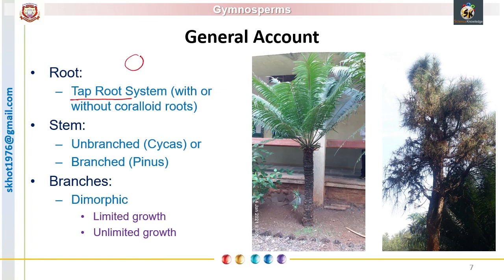Gymnosperms produce a tap root system, meaning the roots produced from the radicle remain persistent. In a few plants we can see coralloid roots — for example, in Cycas we get coralloid roots. Coralloid roots are small roots produced near the soil surface. They are negatively geotropic, meaning they tend to come out of the soil. They show endosymbiotic association with nitrogen-fixing cyanobacteria, so they take part in nitrogen fixation.